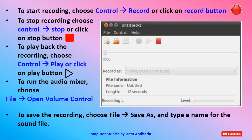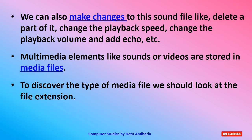To run the audio mixer, choose the File menu and select Open Volume Control. After the recording is confirmed correct, save the file by choosing File menu and selecting Save As, then type a name for the sound file. You can also make changes to the sound file: delete a part of it, change the playback speed or volume, or add an echo effect. Nowadays many mobile applications can do all these things. The information in the textbook is outdated — we mostly use smartphones for recording.